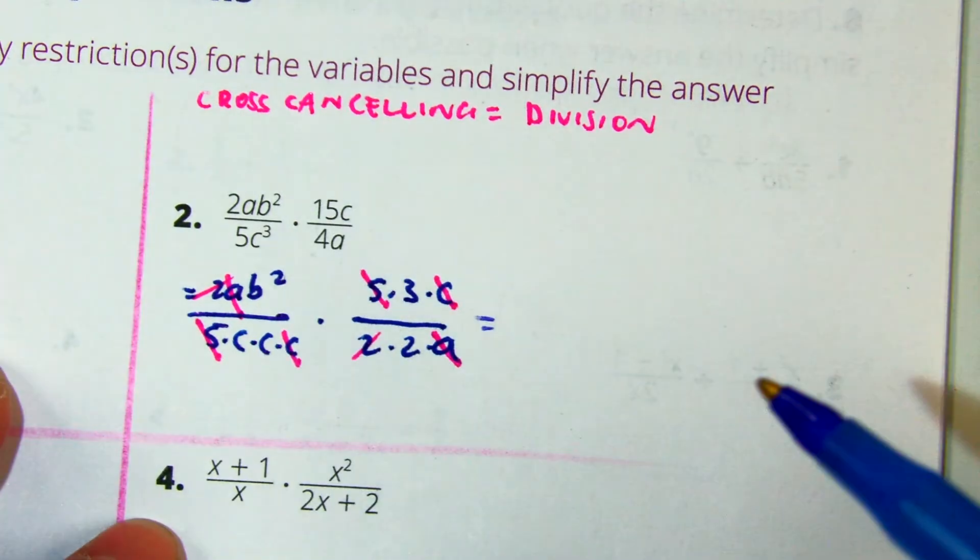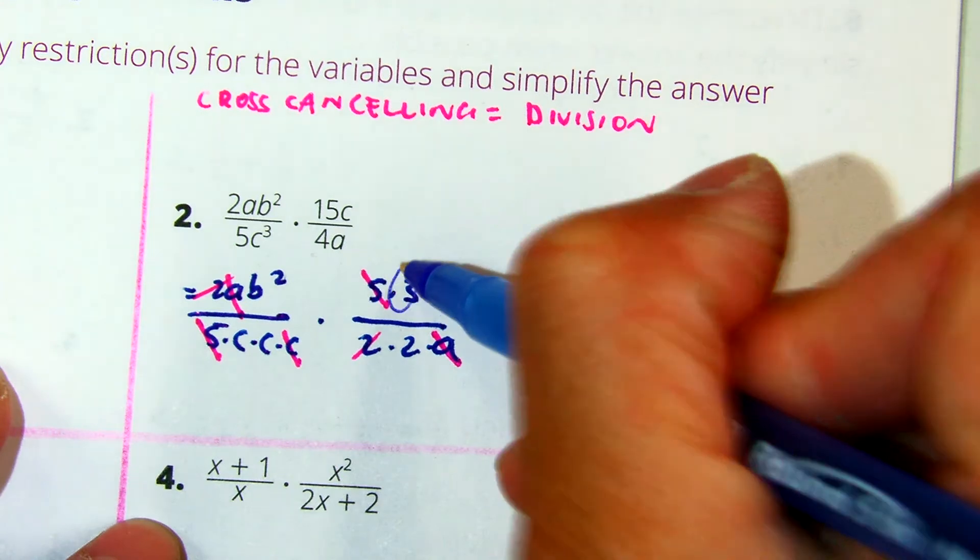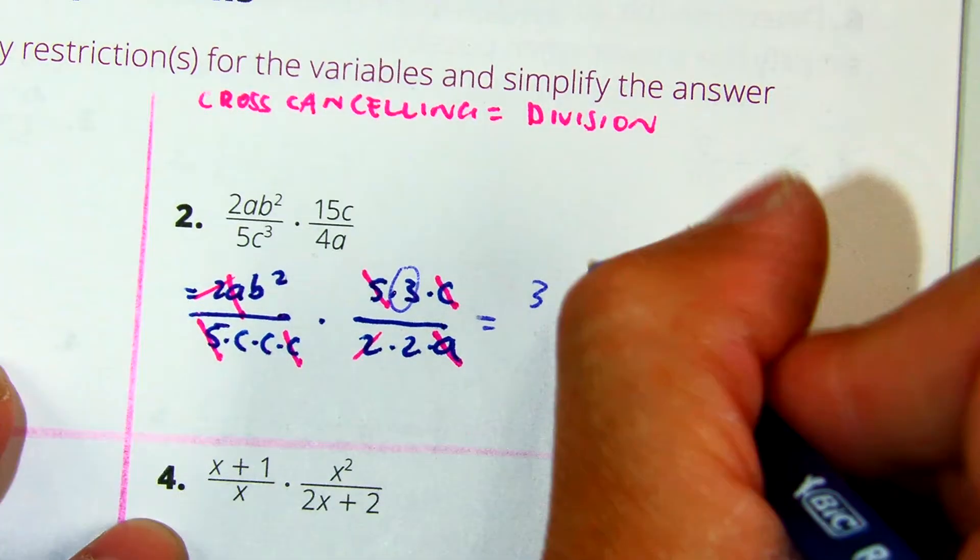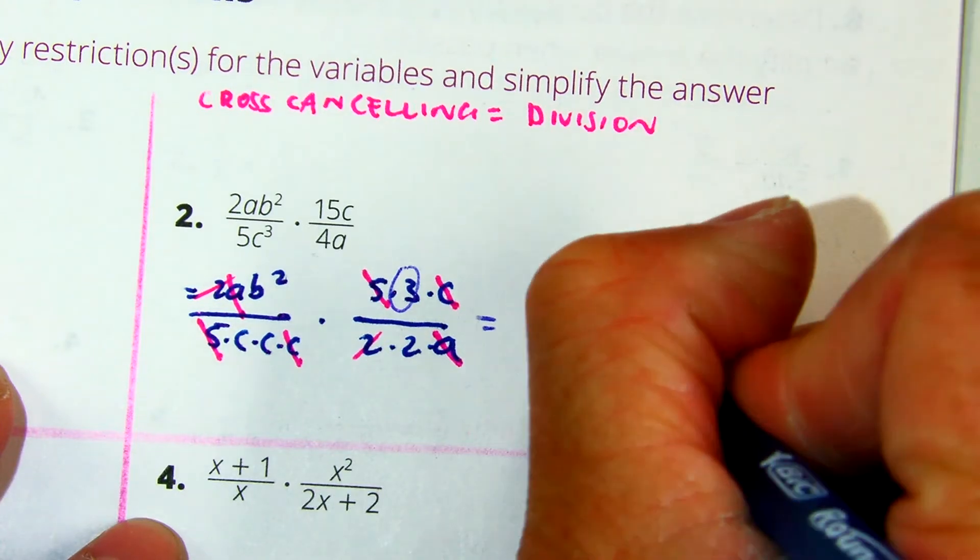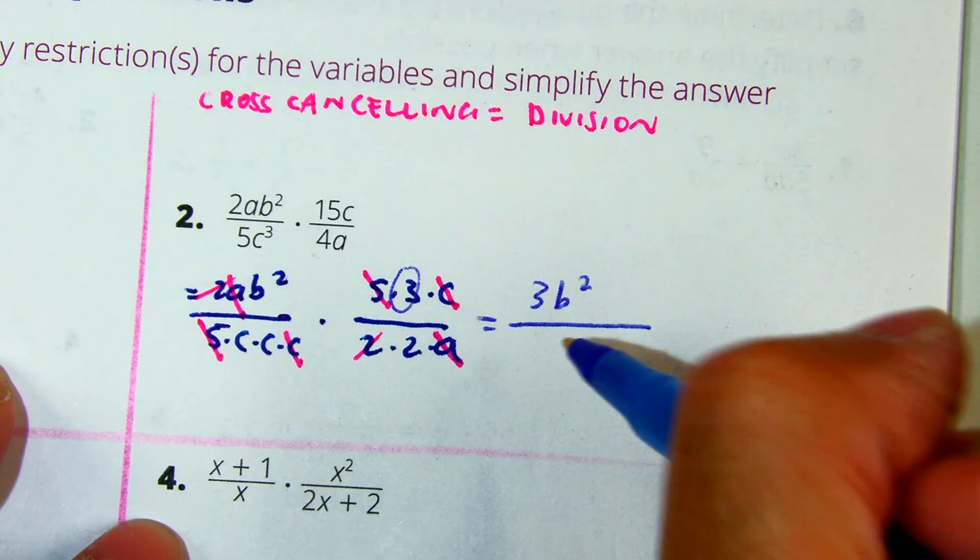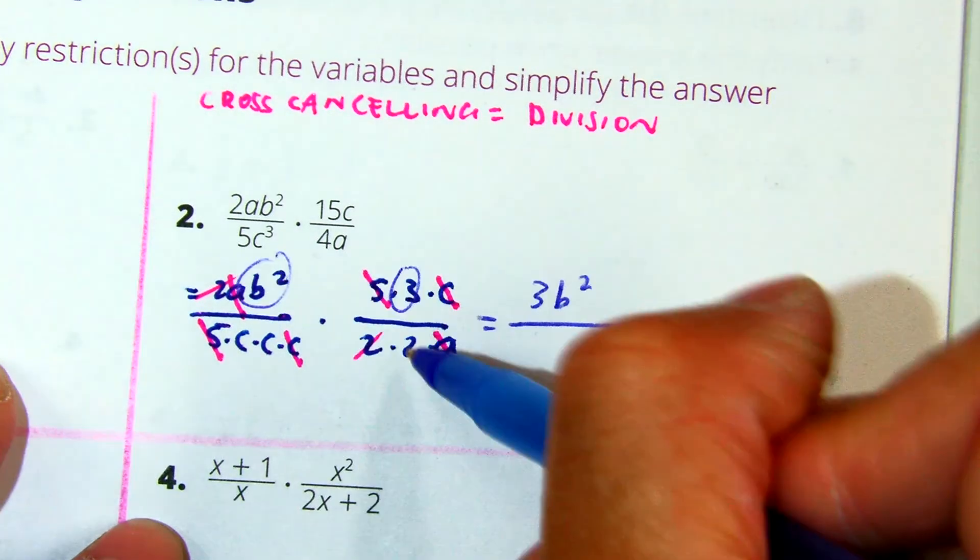What number did I not cancel? 3. So I'm going to write the 3 first. Any letters? Numbers. Letters.